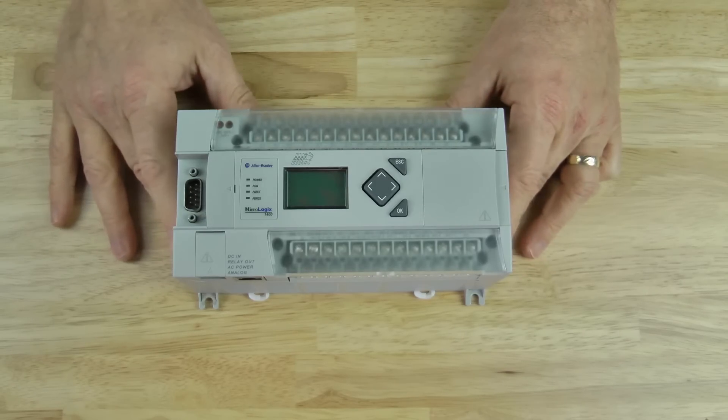Here we have a MicroLogix 1400, which has a built-in battery-backed real-time clock. And after a couple years of use, you may find the battery low light comes on.